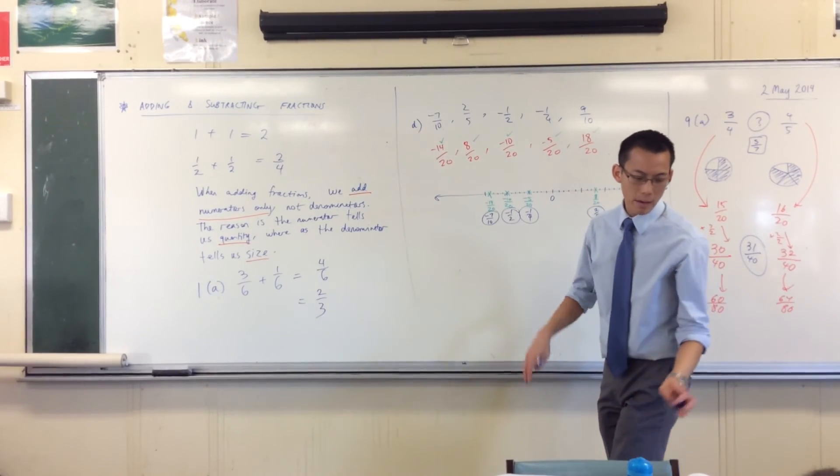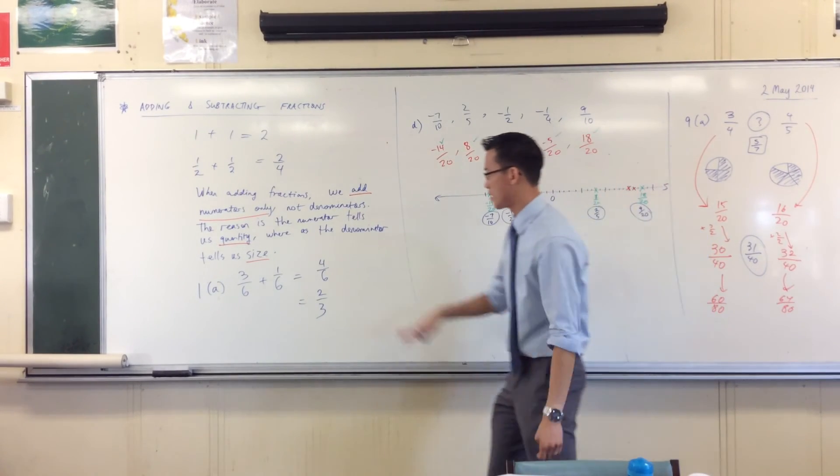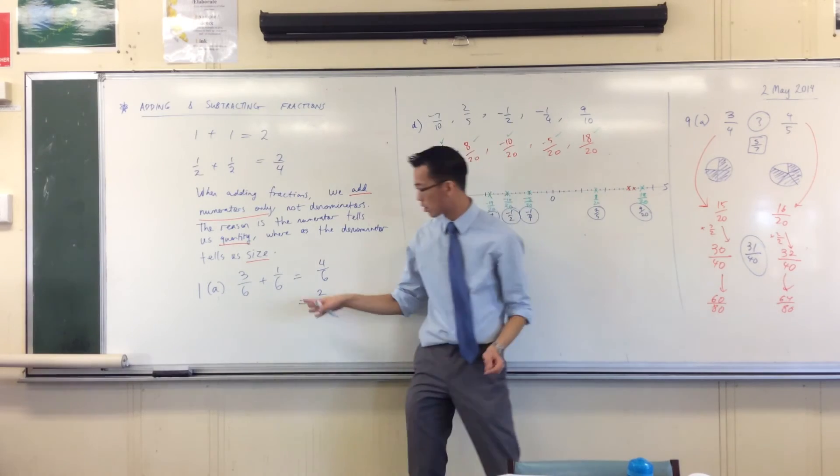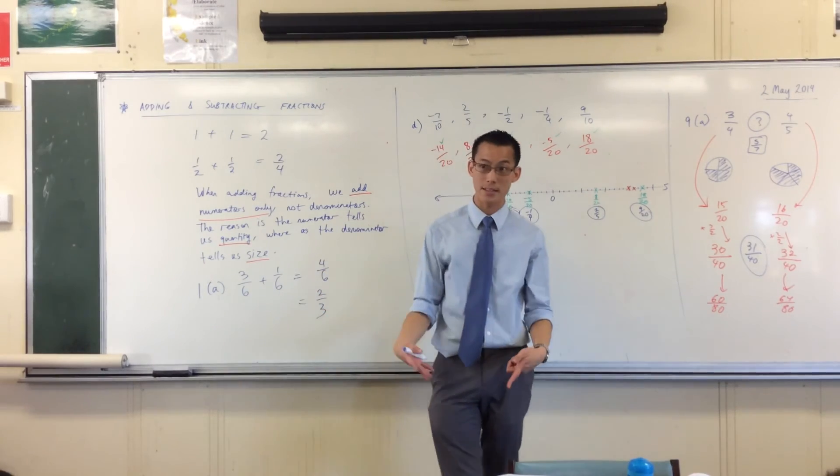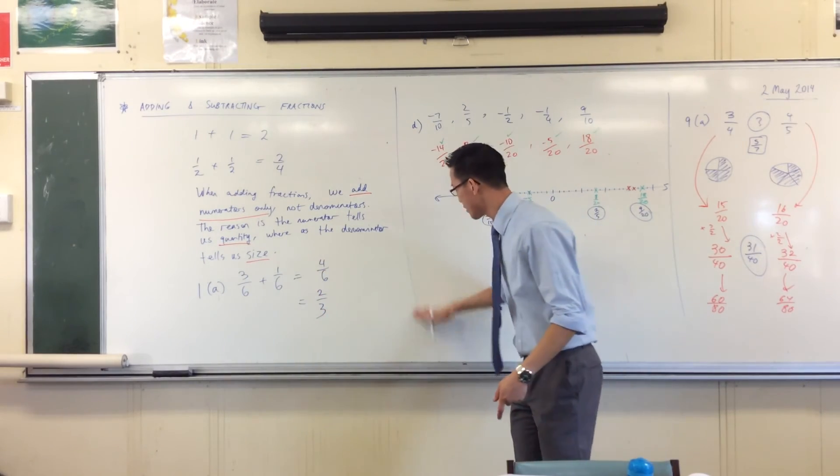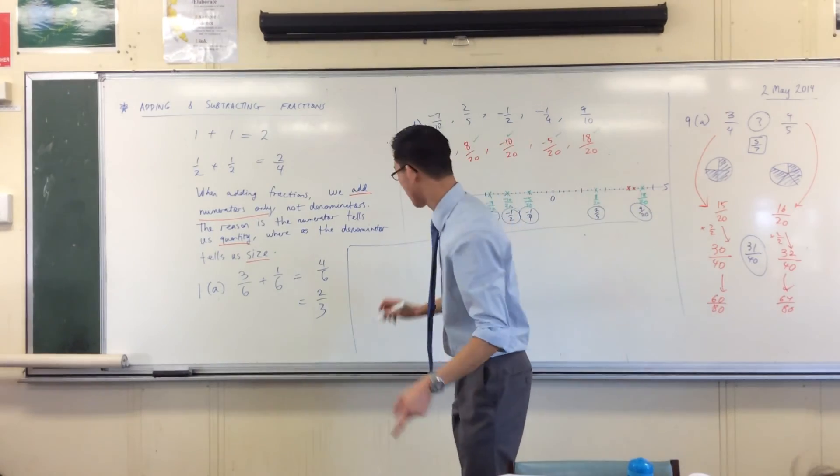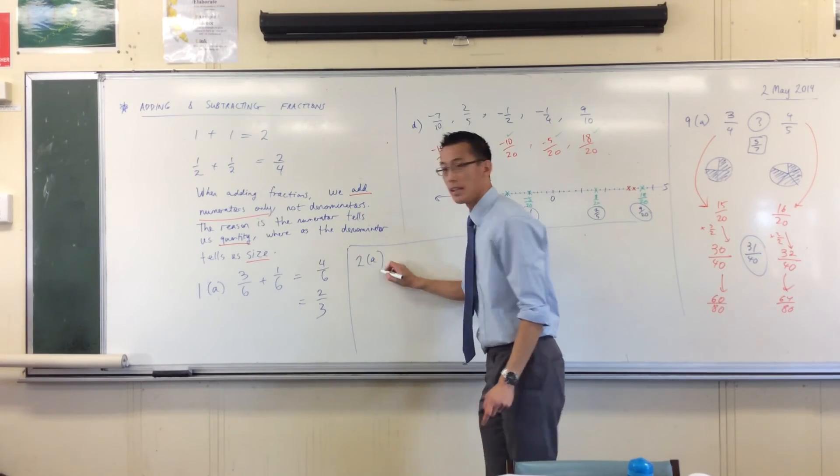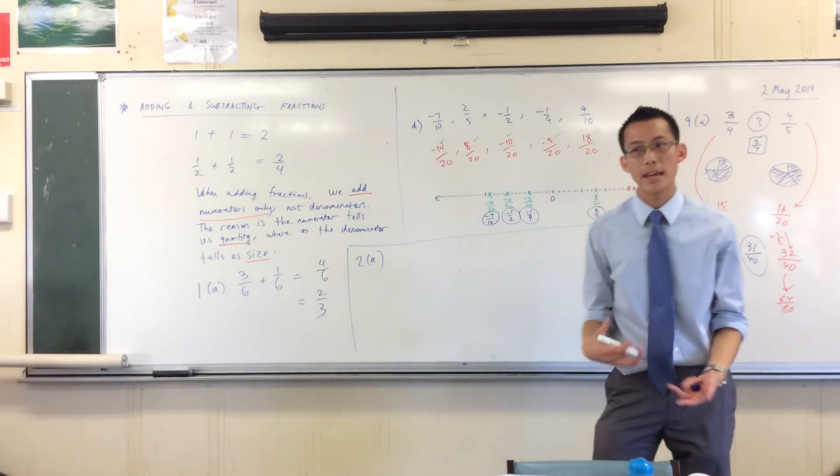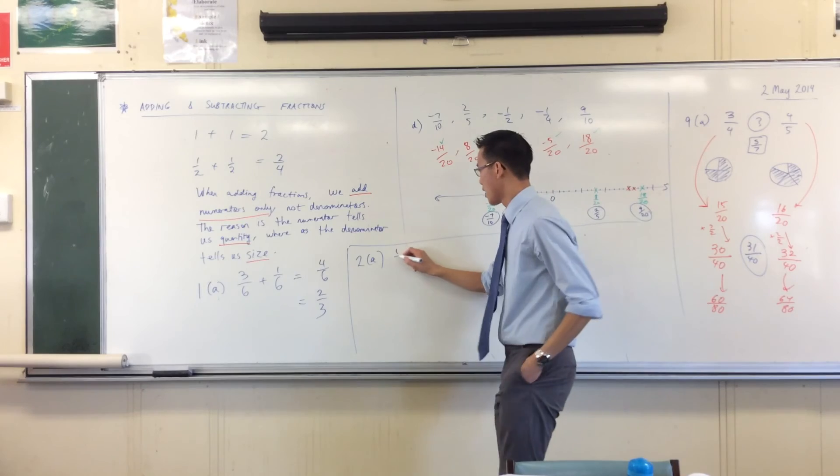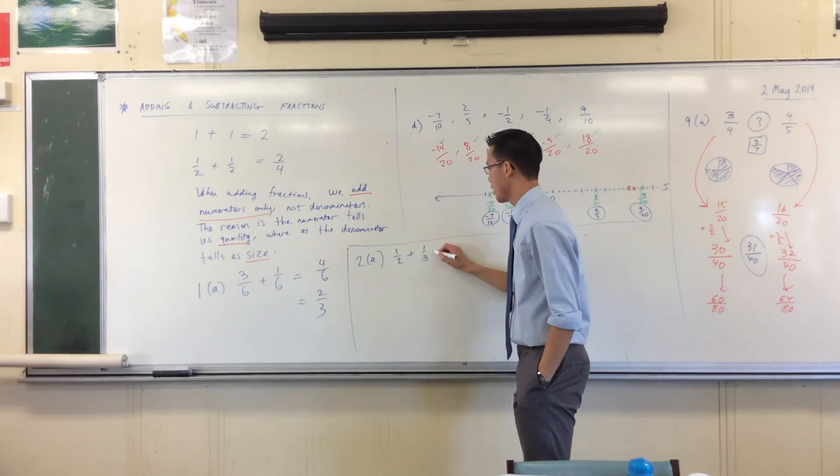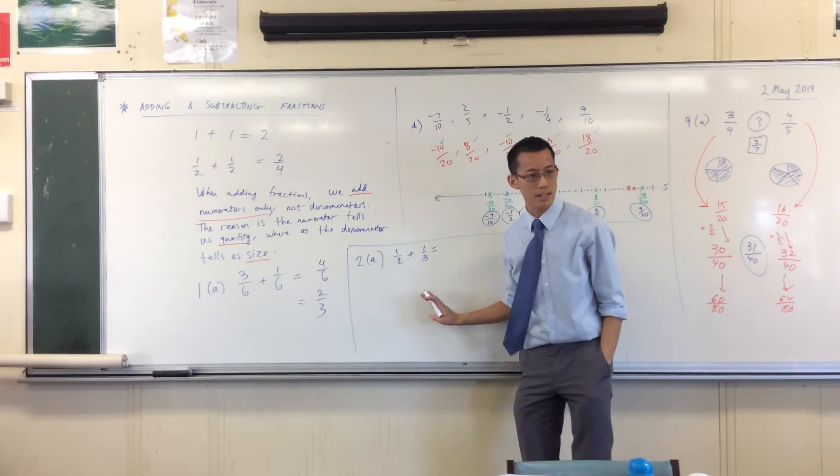Now in question one, there's addition and there's subtraction, but they've all got the common denominator, which makes these nice and easy. Do we have to simplify? You should simplify, yes. Let's have a look at question two. The denominators are different - a half plus a third. So being that the denominators are different, the very first thing you must do is get a common denominator, and then they can talk to each other.